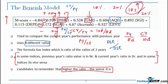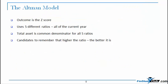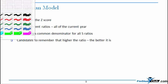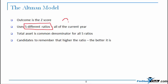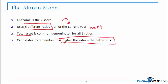Compare the Beneish model with the Altman model, where the outcome is a Z-score. Altman uses five different ratios, all from the current year - so there is no comparison with the previous year. All five ratios have a common denominator: total assets. The most differentiating aspect from Beneish is that for Altman, higher the Z-score the better it is. Altman links things like working capital, net profit margin, and sales to total assets, decomposing the firm's performance into different aspects.